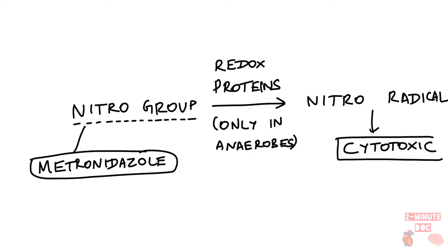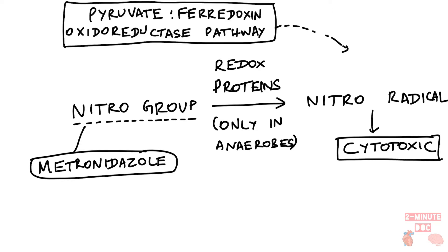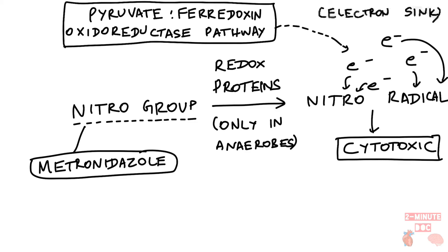This nitro radical is cytotoxic because it takes away all the electrons generated from the pyruvate-ferredoxin oxidative pathway, which operates in anaerobic organisms, and by doing so it acts as an electron sink, thereby severely affecting the metabolism of anaerobes.